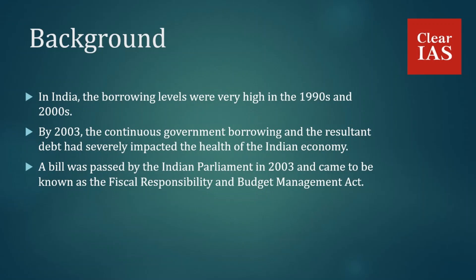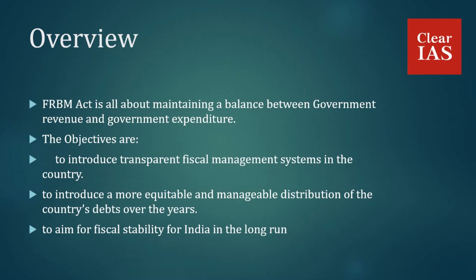The FRBM Act is about maintaining a balance between government revenue and government expenditure. The intention of the Fiscal Responsibility and Budget Management Act was to bring fiscal discipline, efficient management of expenditure, revenue and debt, macroeconomic stability, better coordination between fiscal and monetary policy, transparency in fiscal operations of the government, and achieving a balanced budget. The objectives of the FRBM Act were to introduce transparent fiscal management systems in the country.